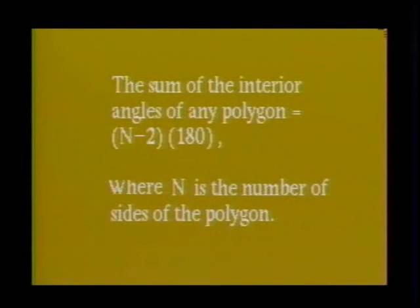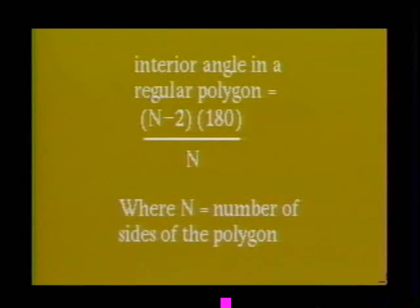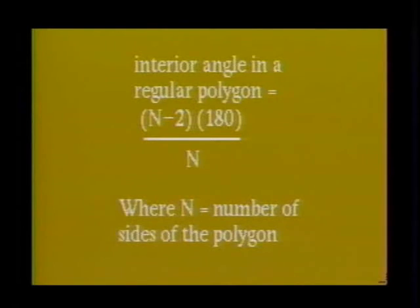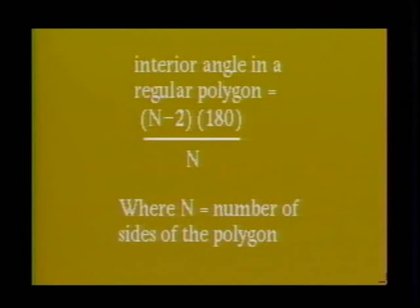The measure of each interior angle in a regular polygon. If we know that a polygon is regular and know the number of sides that it has, we can use the formula (n - 2) × 180 divided by n, where n is the number of sides, to calculate the measure of each interior angle in the regular polygon.